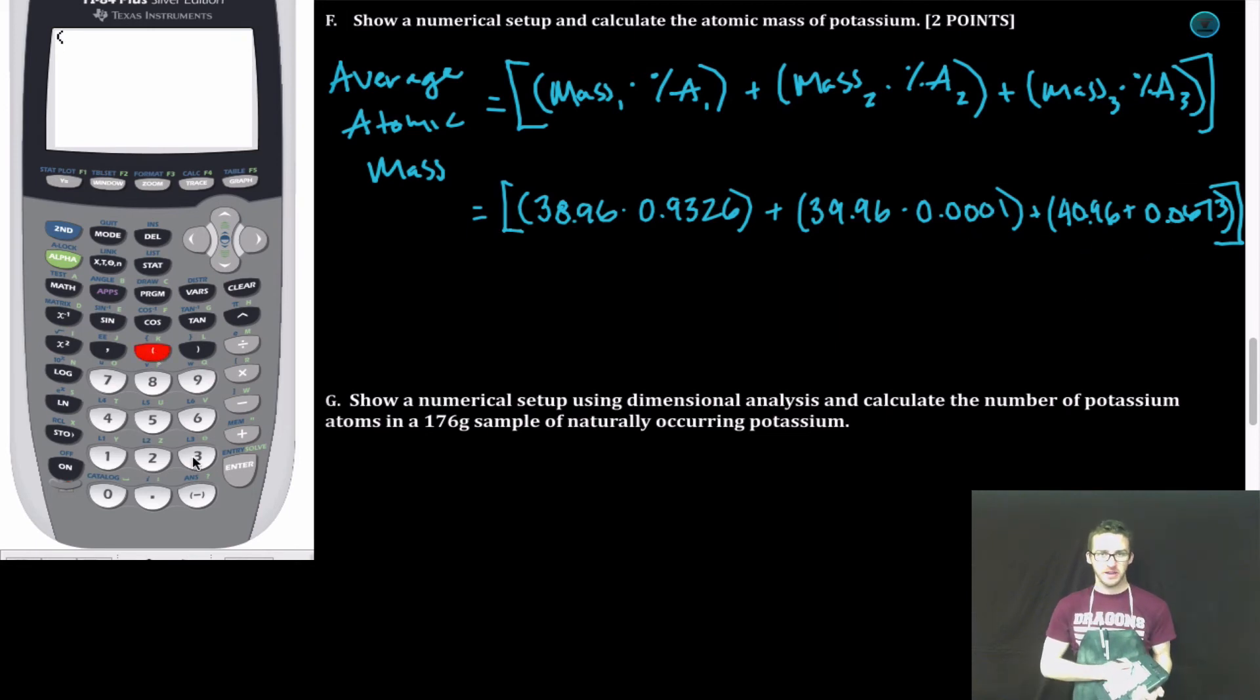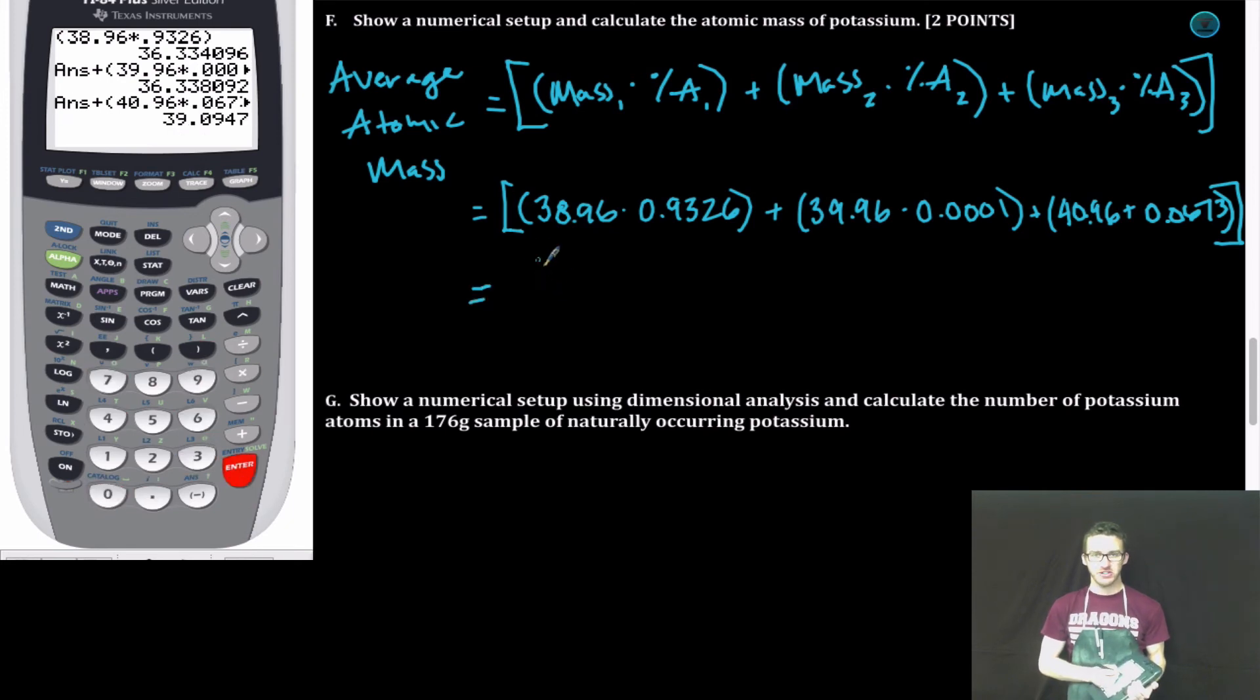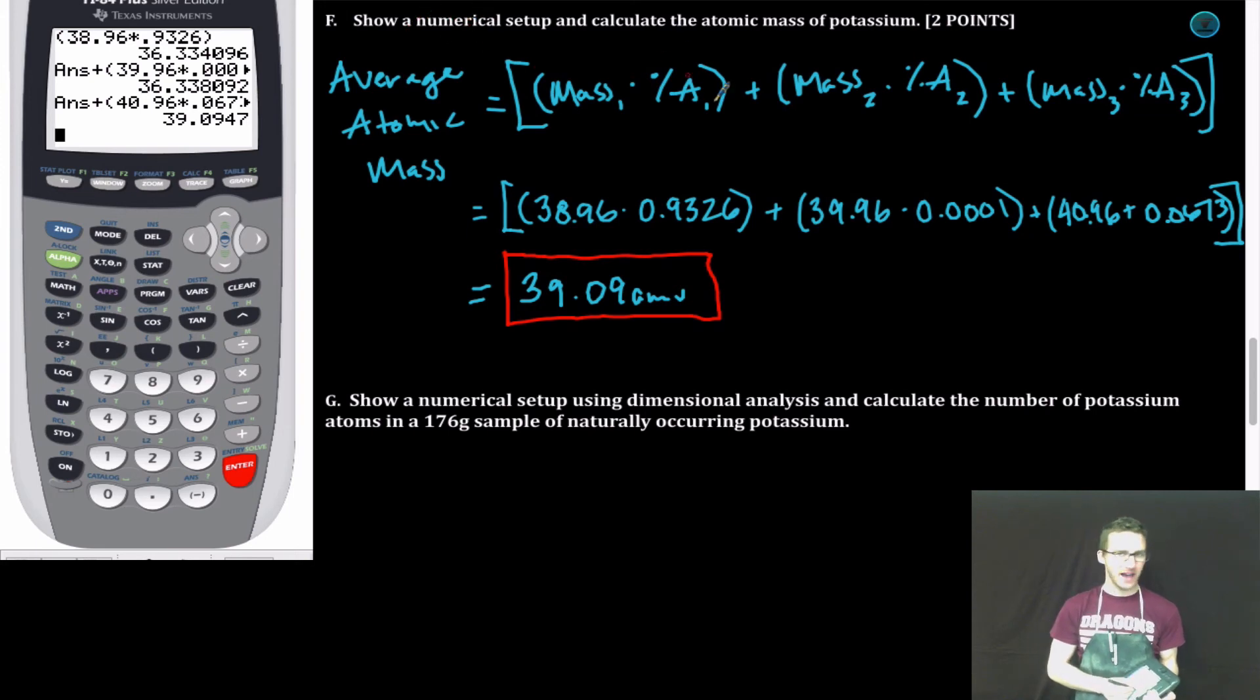Just hop to your calculator. Average atomic mass of potassium, 39.09 amu. Two points. Showing a numerical setup and calculating. That brings us finally to part G.